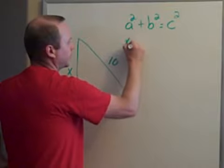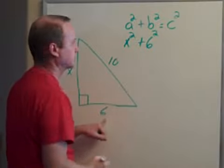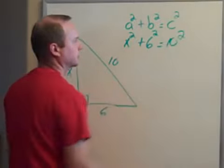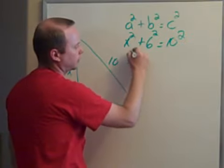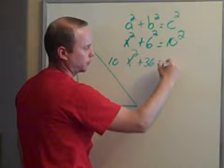Alright, so let's plug this in. I've got x squared plus, and I've got 6 here, 6 squared equals 10 squared. So I've got x squared, 6 squared is 36, plus 36 equals 10 squared is 100.